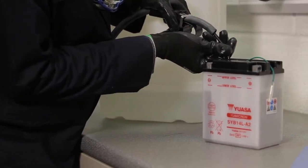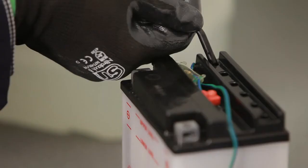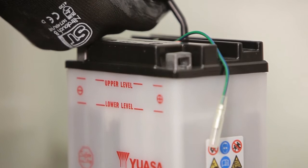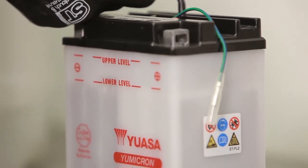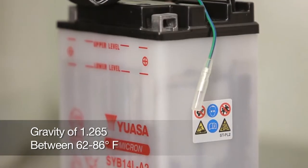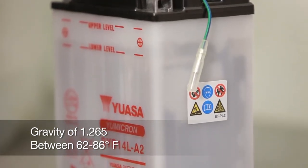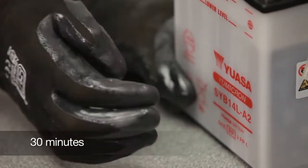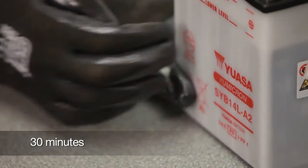Fill each cell with electrolyte to the fill level indicated on the battery case. Always wear protective eyewear and gloves when working with electrolyte. The electrolyte should have a specific gravity of 1.265 and be between 60 and 86 degrees Fahrenheit. Leave the battery for a minimum of 30 minutes, gently tapping occasionally to remove any bubbles trapped between the plates.